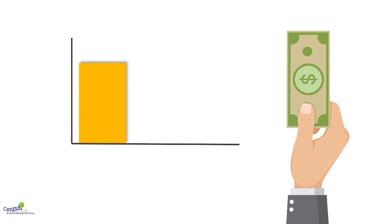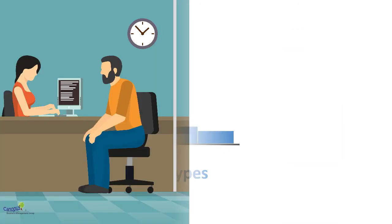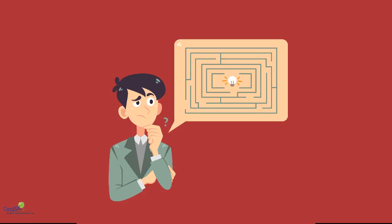Or simply, if you want to optimize cost, you can select 20% of the expense categories that contribute to 80% of the total cost by value. If you want to improve customer experience, you can identify 20% of complaint types which contribute to 80% of complaints by volume, and thus become a major cause of concern for customer dissatisfaction.